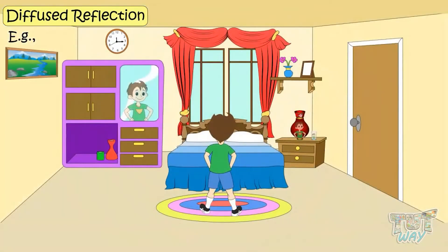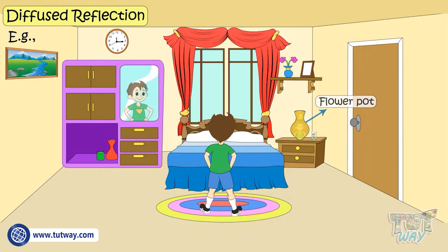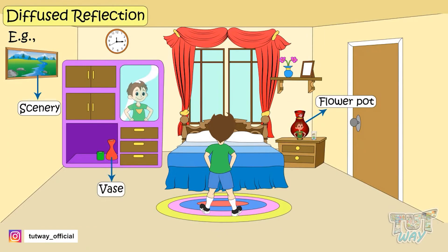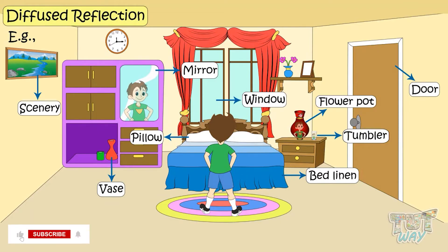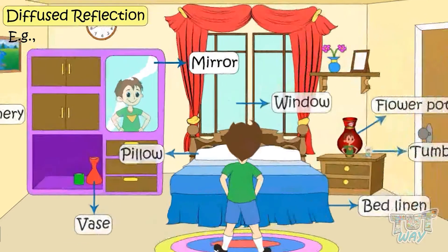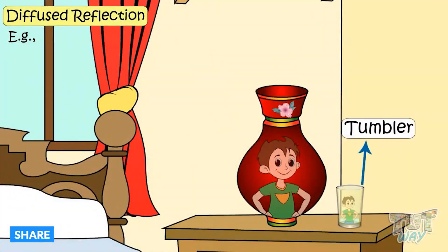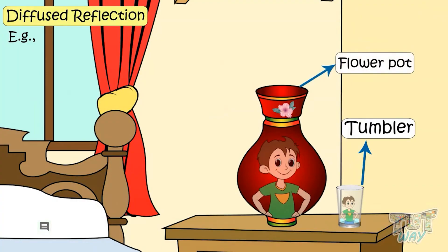Here we have a room with different things: a flower pot, scenery, a vase, bedded linen, pillows, a door, a window, a mirror, and a tumbler. What do you observe? You can see everything. You can also see a reflection in this mirror, on this tumbler, and even in this pot. Why?